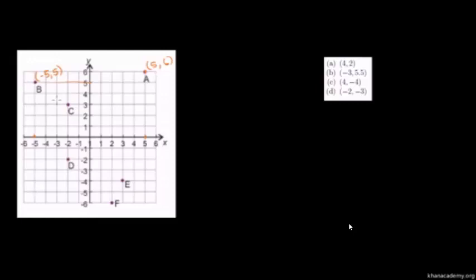Let me switch colors. Point C — I think you're getting the hang of this. Let's do the y-coordinate first: the y-coordinate is 3. And then the x-coordinate is negative 2. Negative 2 — you always put the x-coordinate first; that's just the convention we use. Point D: x-coordinate is negative 2, y-coordinate is negative 2 as well.